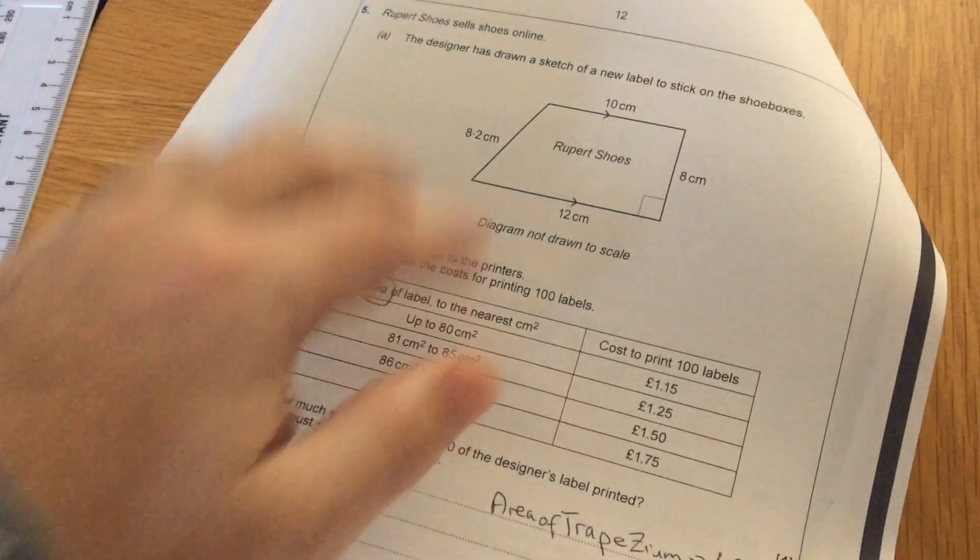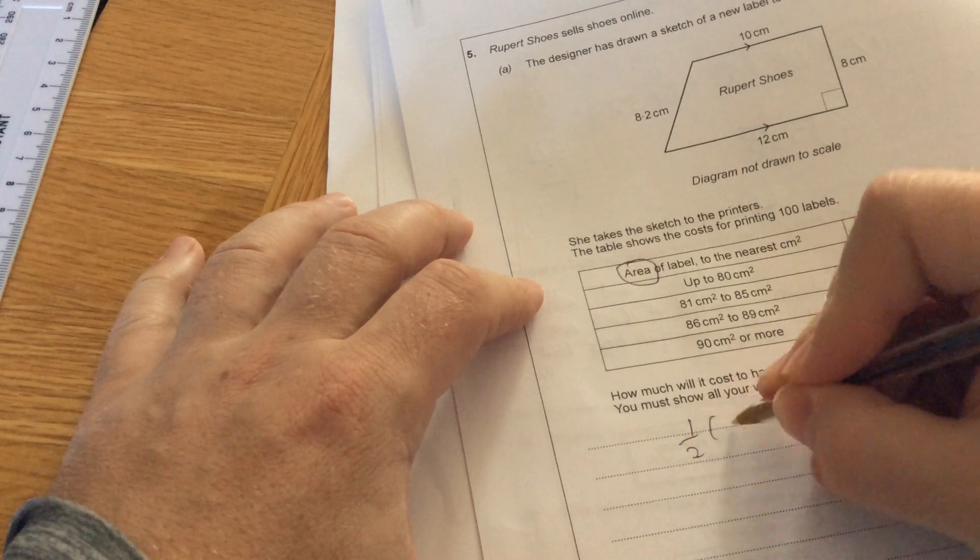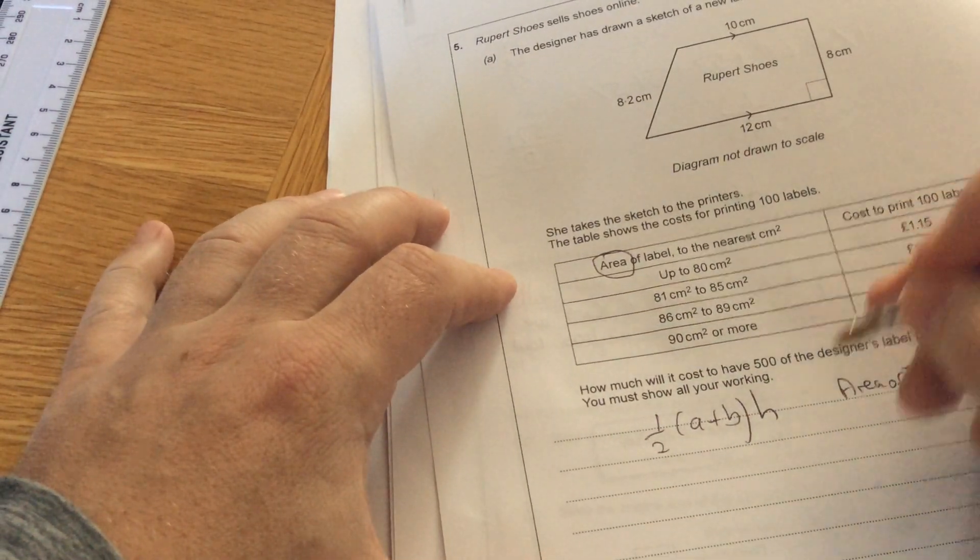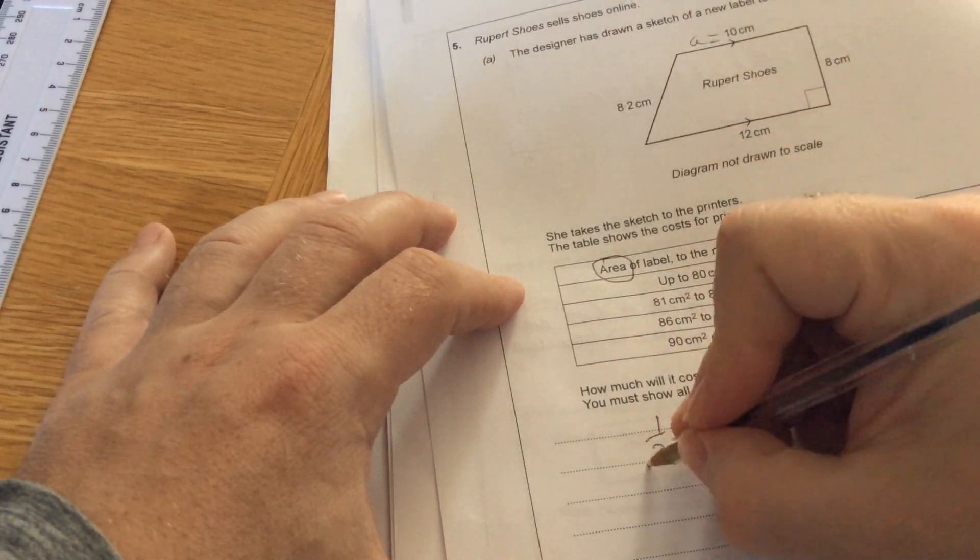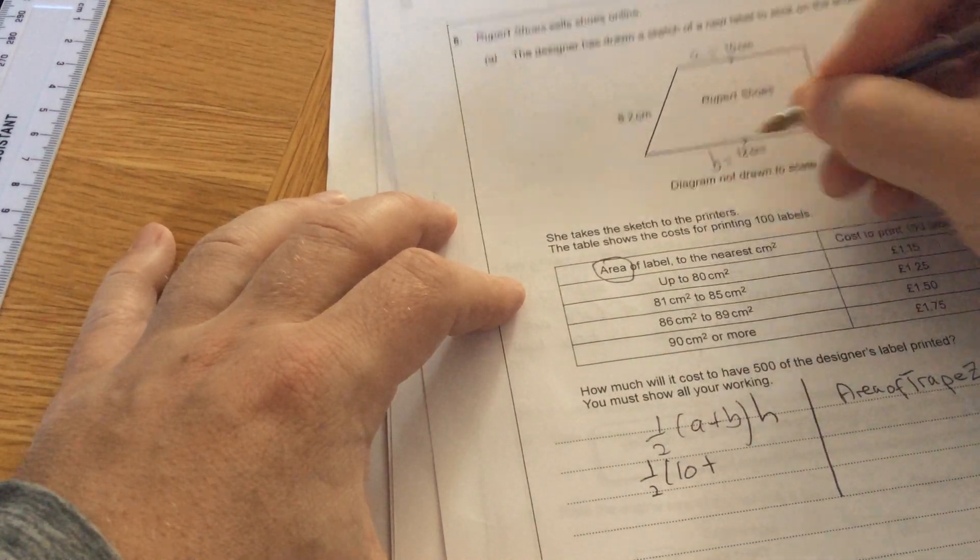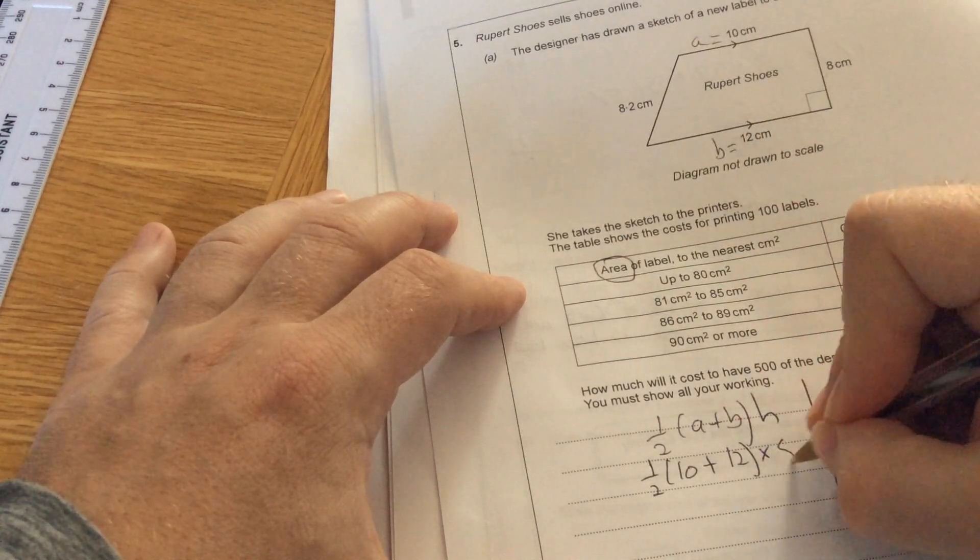Looking at that formula for this question, it's a half of A add B times the height. A is the number on the top, so A is 10. It's a half of 10 plus B is the number on the bottom, and the height is the number that's perpendicular, going straight up.